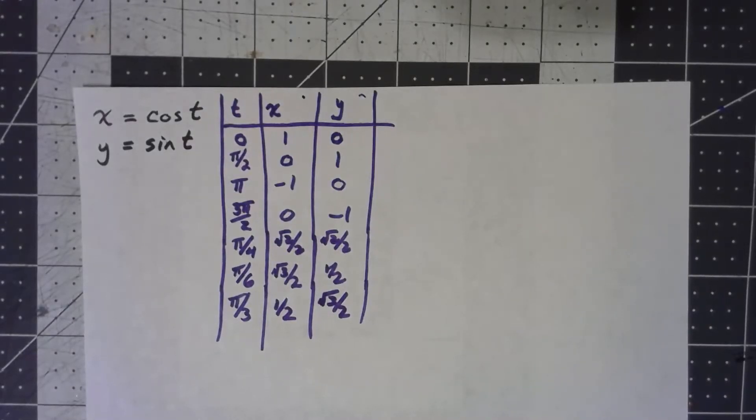Before I get into parameterizing circles, let's take a look at a simple little example here. Maybe not entirely simple, but I just want to go ahead and graph this set of parametric equations: x is equal to cosine of t, y is equal to sine t.